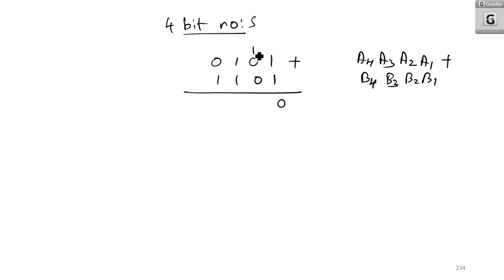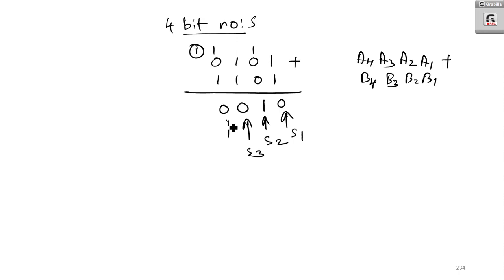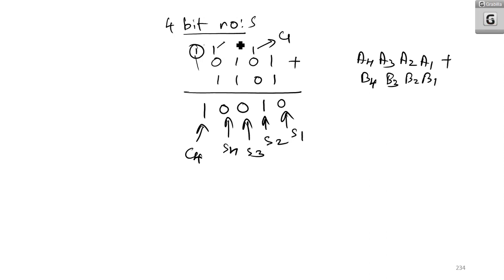In between you are propagating the carry. So 1 plus 1 is 0 with a carry 1; 1 plus 0 gives 1; 1 plus 1 is 0 with a carry 1; 1 plus 1 is 0 with a carry 1. So here the results are S1, S2, S3, and S4. The carry out you will get is 1, so you can take this as C4. The intermediate carries are C1, C2, C3, and C4.